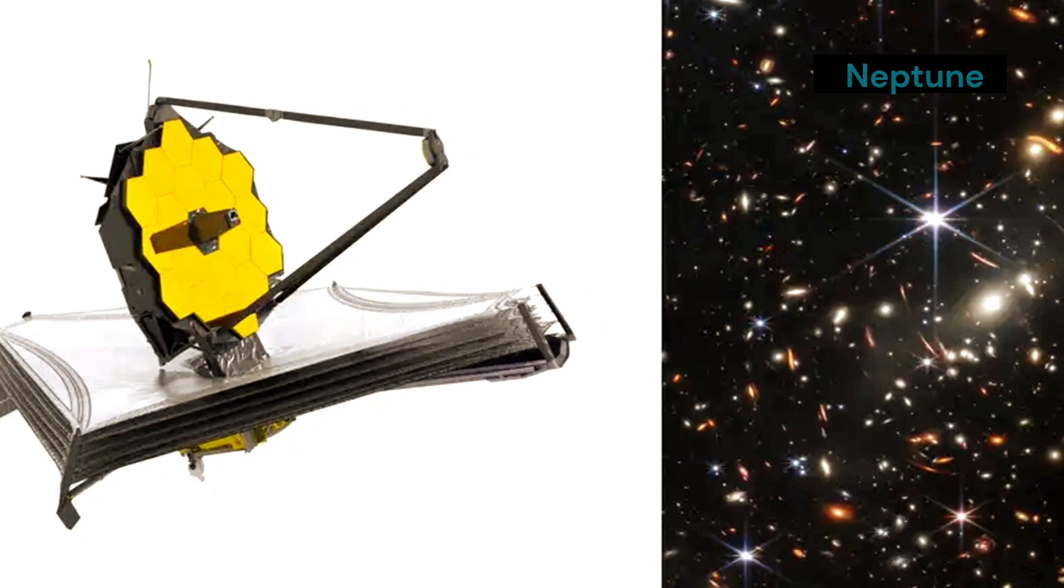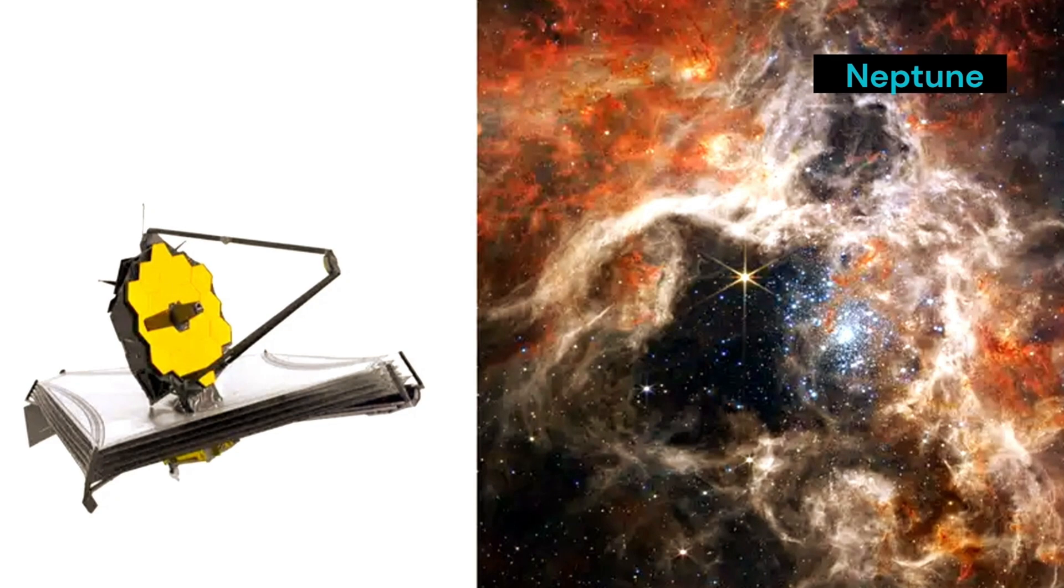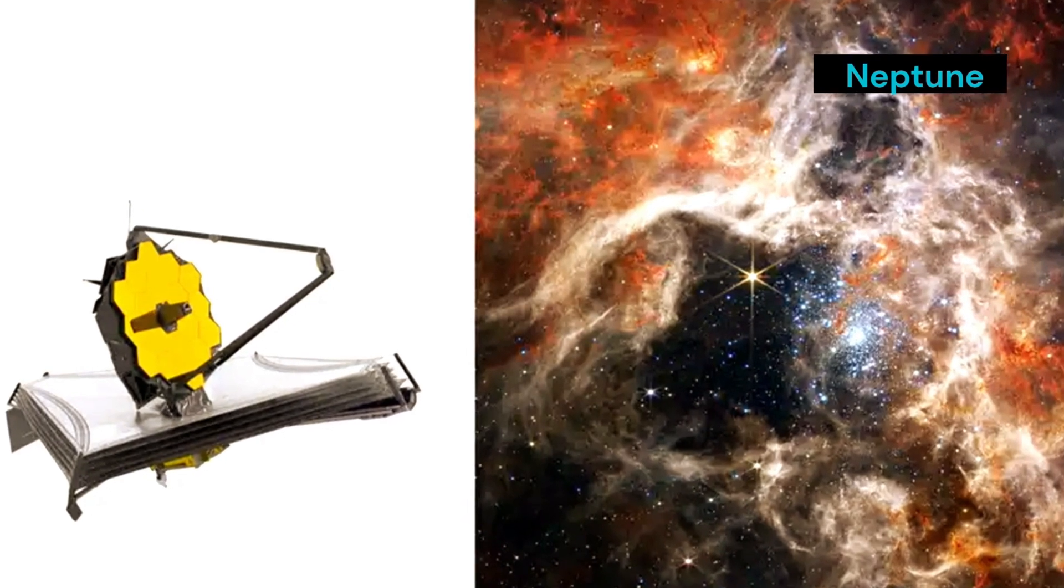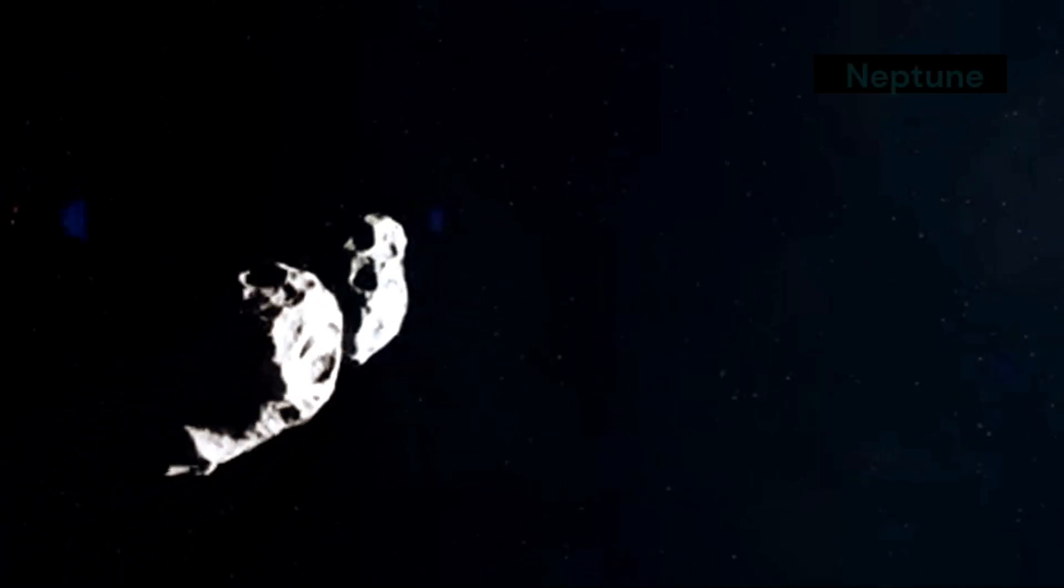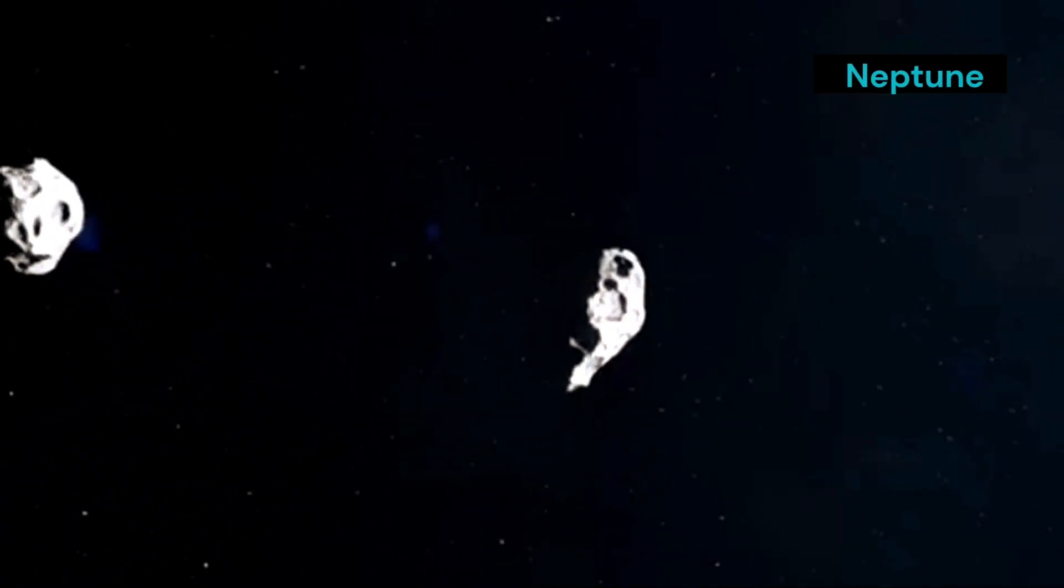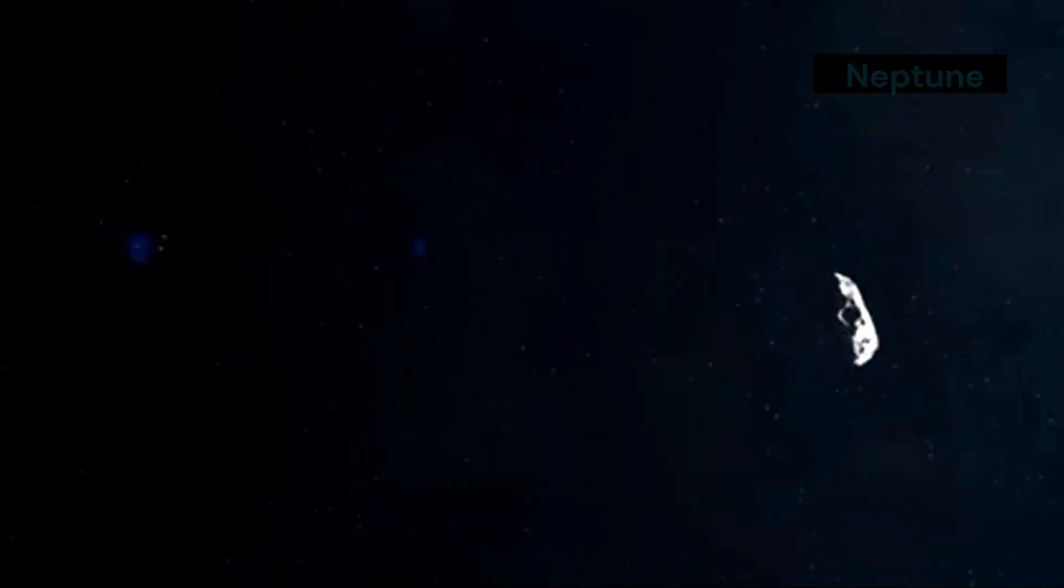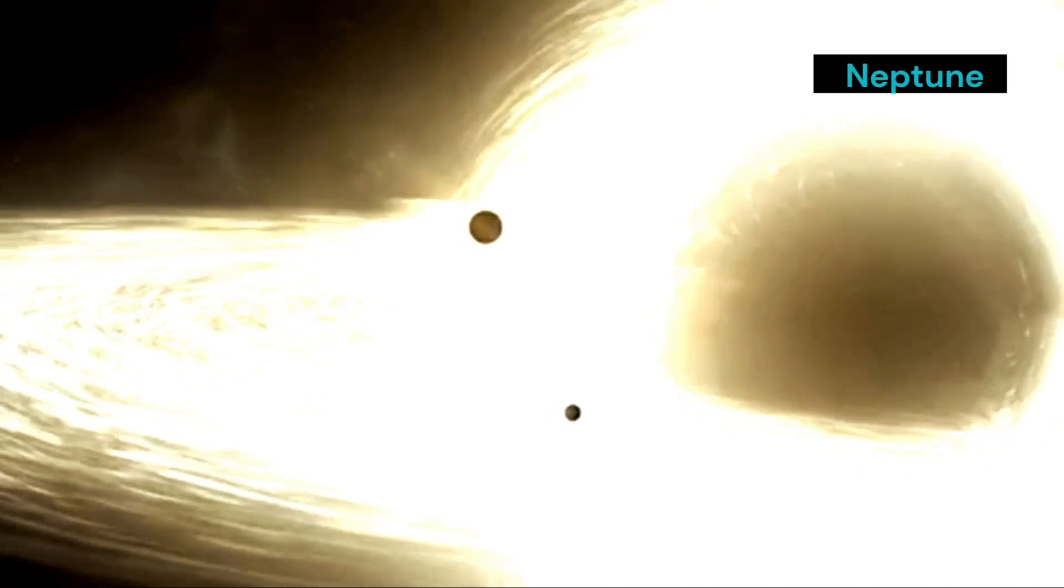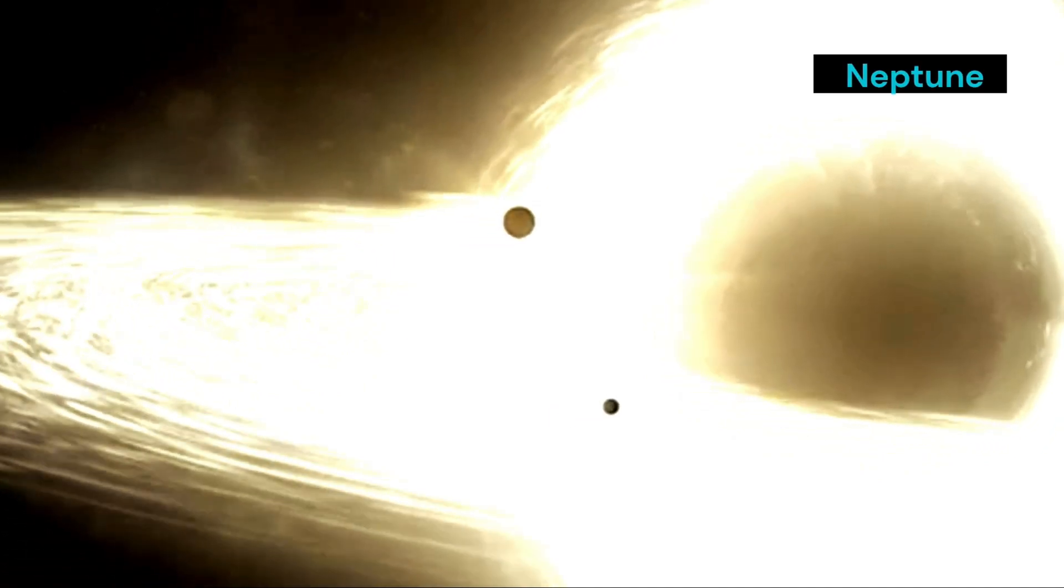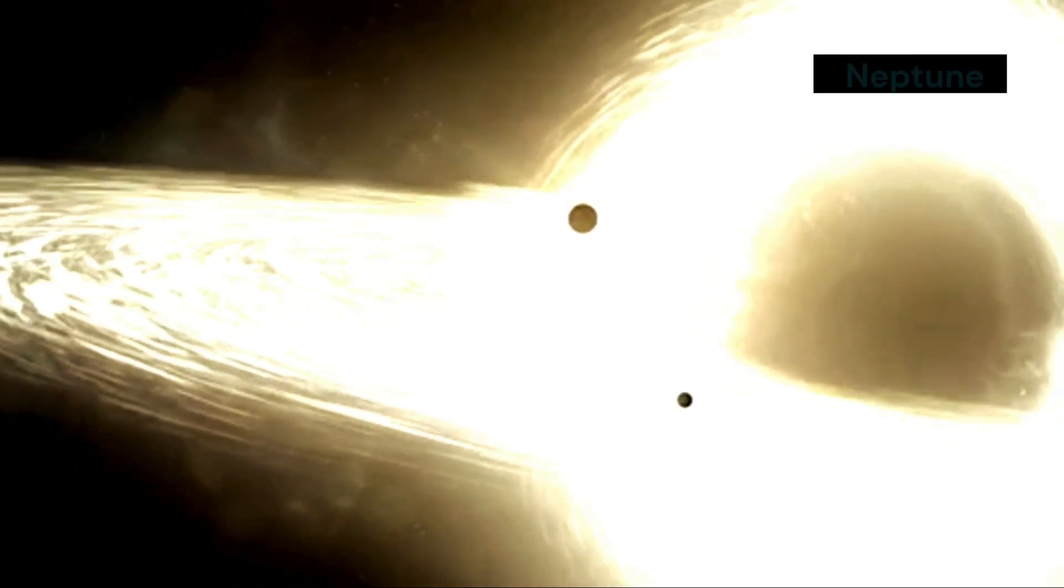Echoes of creation: understanding planetary formation. The story of how planets come into existence is a fascinating journey through time and space. Collisions like the one observed on Neptune are not uncommon in the grand scheme of the cosmos. These cosmic collisions are a fundamental part of the universe's dynamic nature. In fact, they played a crucial role in the formation of our solar system. Without these violent interactions, the planets, moons, and other celestial bodies we see today might never have formed.